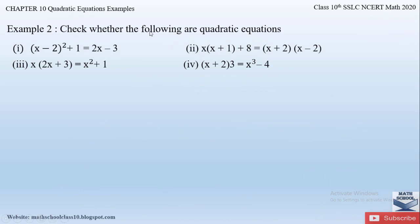Check whether the following are quadratic equations. There are four parts to the question and they have given certain equations. We have to check whether each one forms a quadratic equation or not. Let us begin with the first part: (x − 2)² + 1 = 2x − 3.